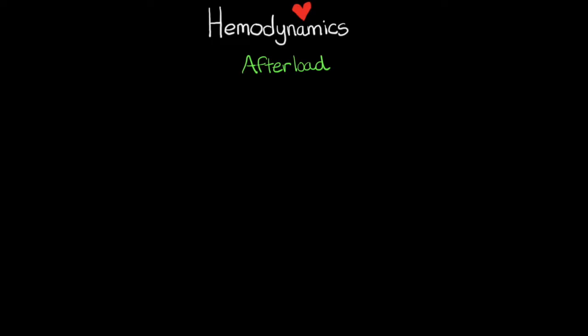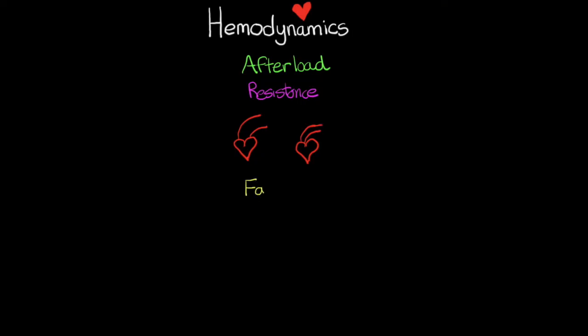The last factor impacting stroke volume is afterload, which can be summed up as resistance — essentially how hard the heart has to work to eject its blood, often described as how clamped down the patient is. Think of the heart beating into a wide aorta versus a tighter, more restricted aorta; afterload is the resistance the heart must overcome with each beat.